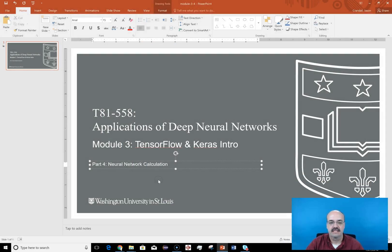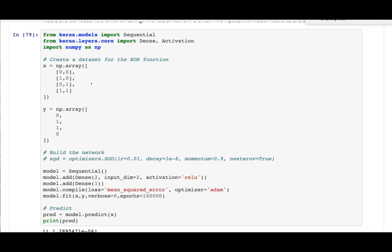Hi, this is Jeff Heaton. Welcome to Applications of Deep Neural Networks with Washington University. This is Module 3, Part 4, Neural Network Calculation. Now let's look at the magic that goes on behind the scenes when you actually train and calculate a neural network.